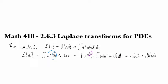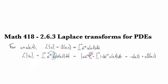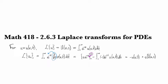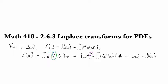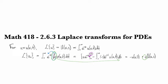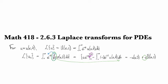So just like before, we see that the derivative in u over here is converted into this factor of s on the transform side.